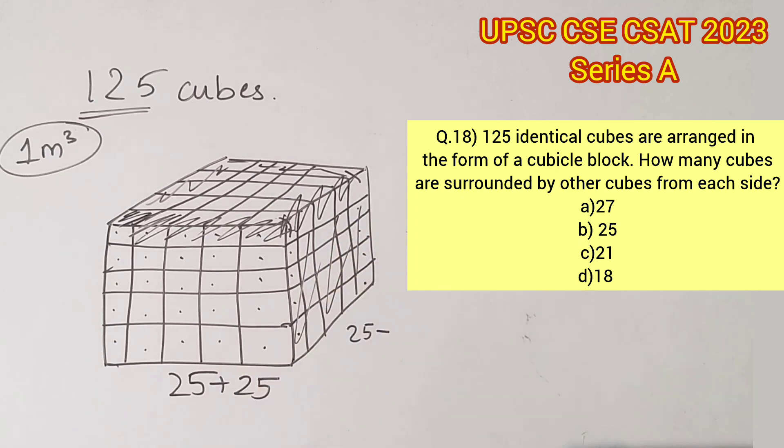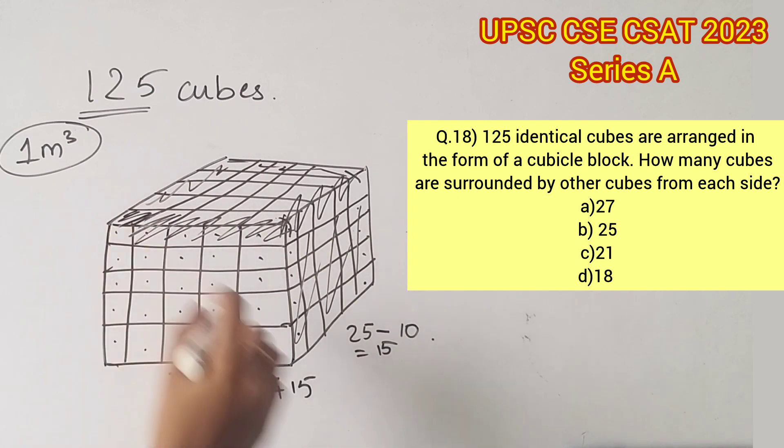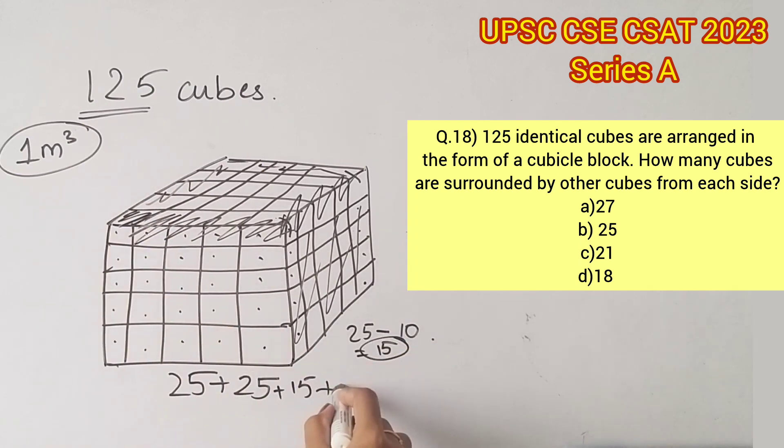5 from this side and 5 from that side, which means 25 minus 10, that is 15. This will hold true for the other side as well, therefore let's add 15 again here.